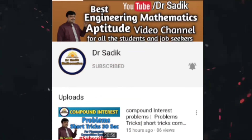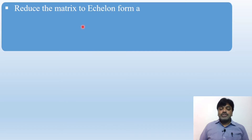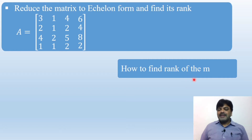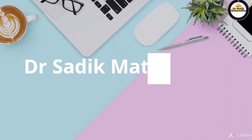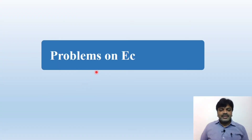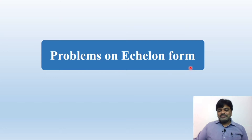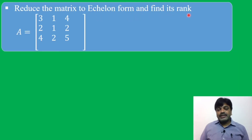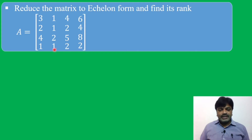Subscribe to Dr. Sadiq Mathematics channel for getting more online videos. The problem is: reduce the matrix to echelon form and find its rank. Matrix A is equal to [3,1,4,6; 2,1,2,4; 4,2,5,8; 1,1,2,2].